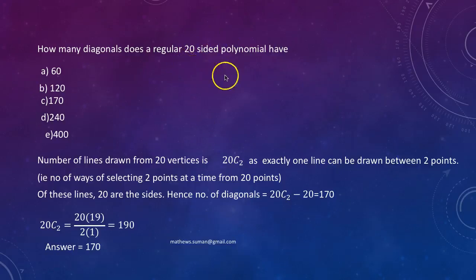This is a problem on polygons. How many diagonals does a regular 20-sided polynomial have? Number of lines drawn from 20 vertices is 20C2. That is exactly one line can be drawn between two points. Of these lines, 20 are the sides. So number of diagonals would be 20C2 minus 20. Now 20C2 is 20 into 19 by 1 into 2 that is 190. So your answer would be 190 minus 20 which is 170.